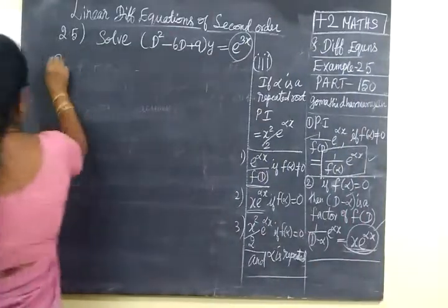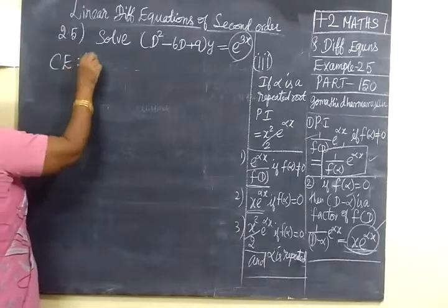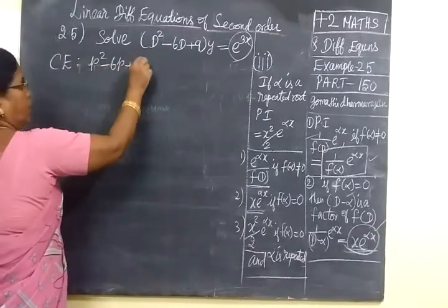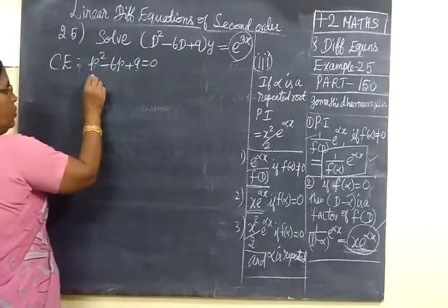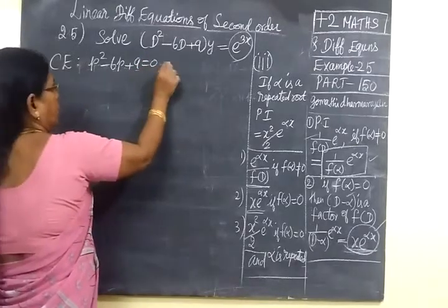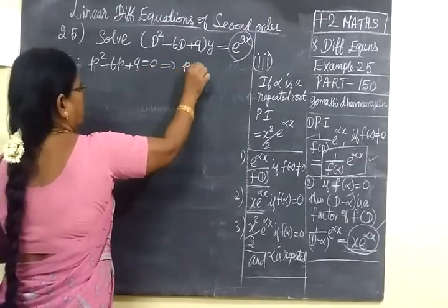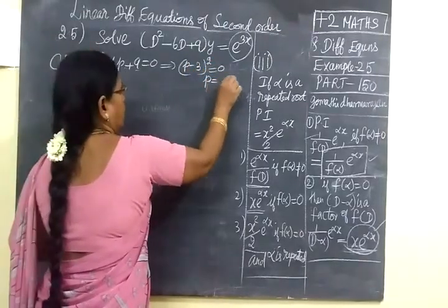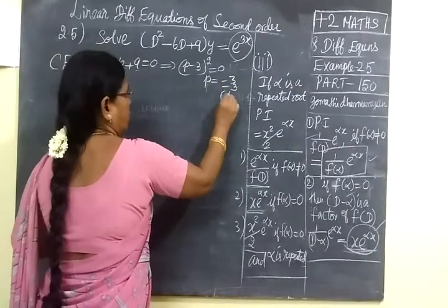So first we find characteristic equation. So p² - 6p + 9 = 0. So that means (p - 3)² = 0. So p equal to 3, 3 twice.